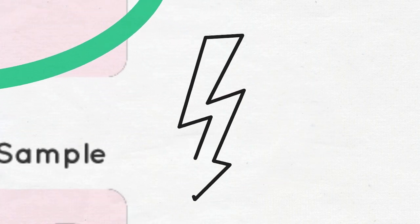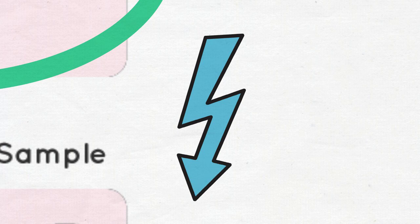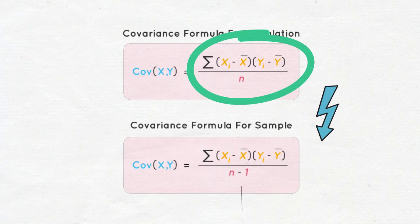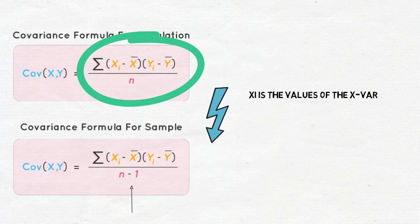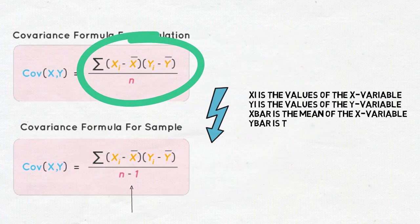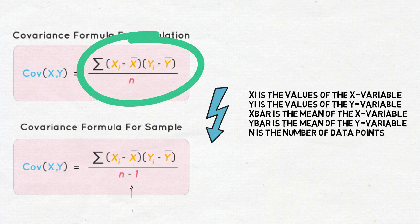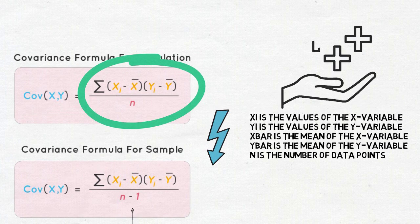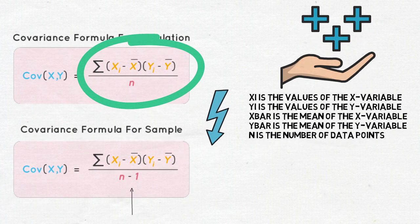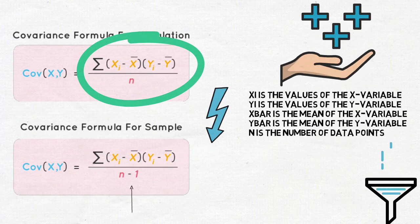The formula is slightly the same for the sample data also but which has n minus 1. Here xi and yi denotes the value of the x and y variable, x bar and y bar denotes the mean of the x and y variable, and n denotes the number of data points.